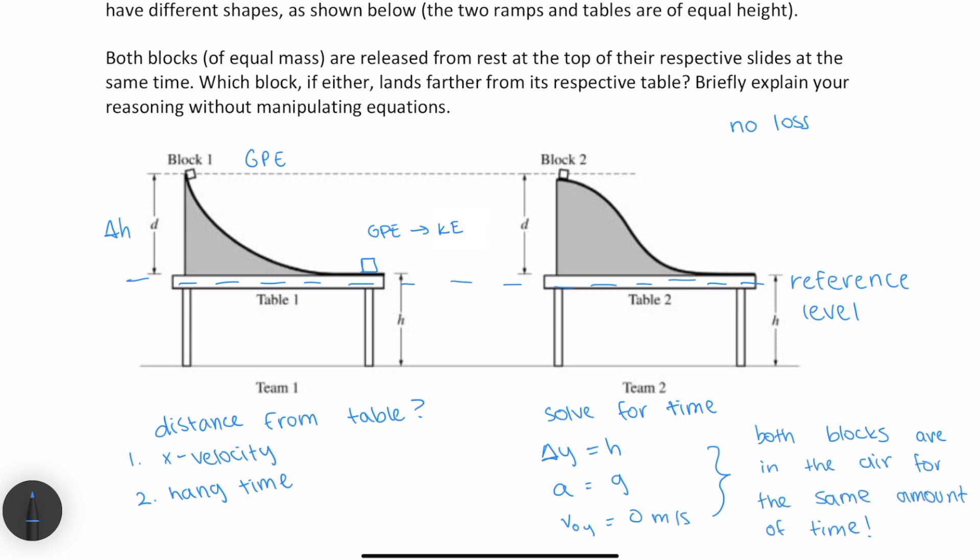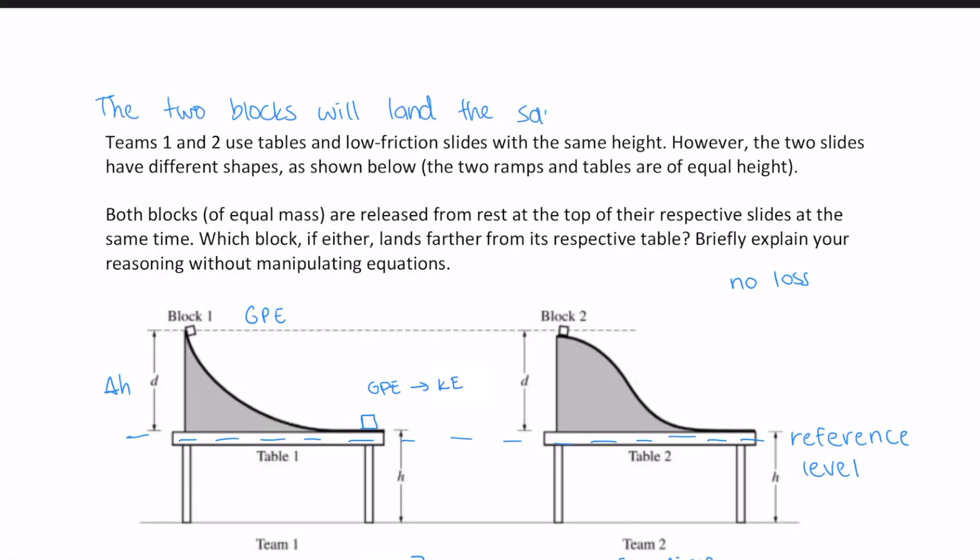Additionally, we know that they left the table with the same kinetic energy, and since they have the same mass, this means that they also left the table with the same X velocity, since kinetic energy equals one-half mv squared. Hence, since both blocks are going the same speed in the X direction and both will experience the same hang time, the two blocks will land the same distance from their respective tables.